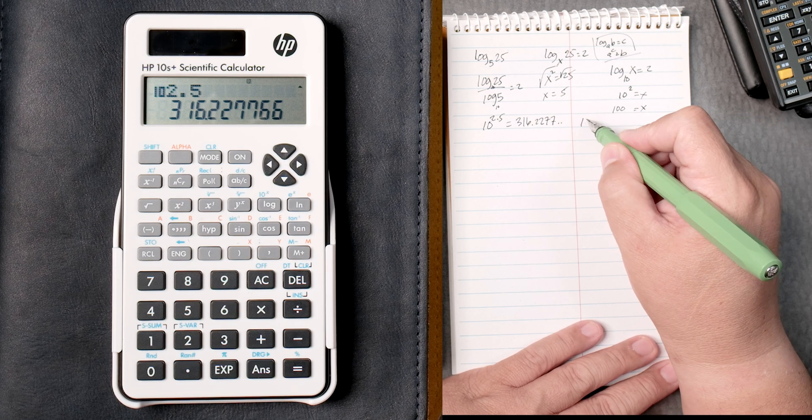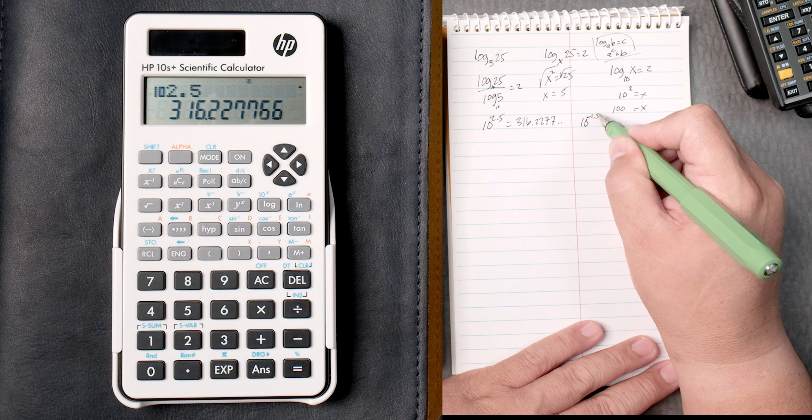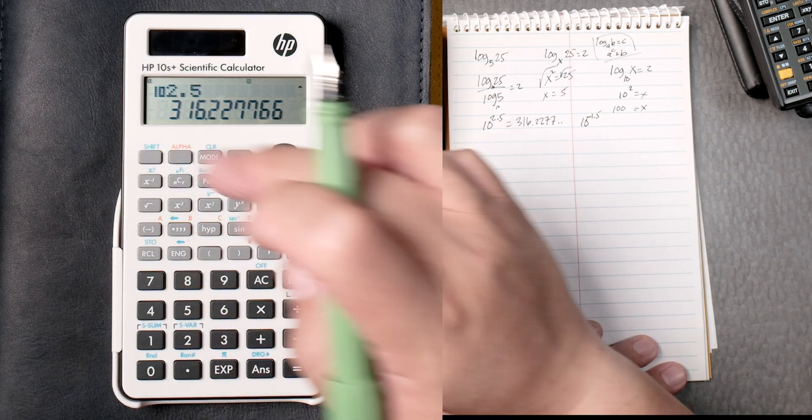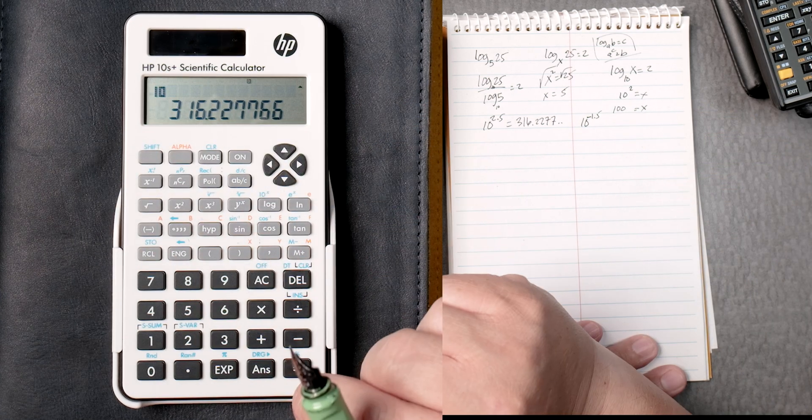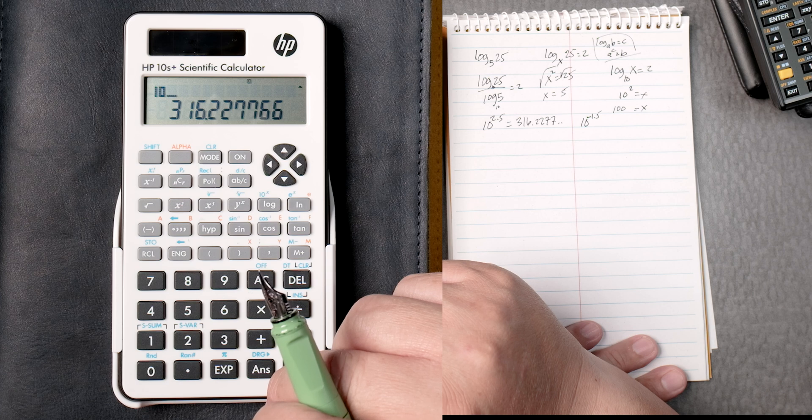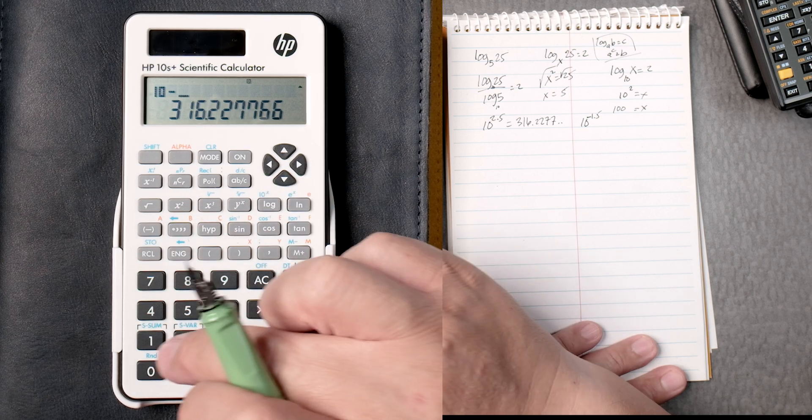Another antilog. 10 to the minus 1.5. Same thing. Shift. And then the log key. And then you're going to put negative, not subtract, 1.5.